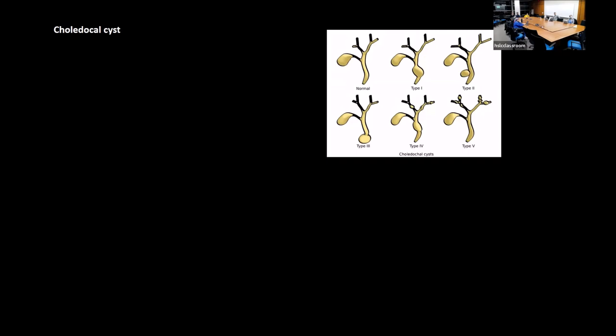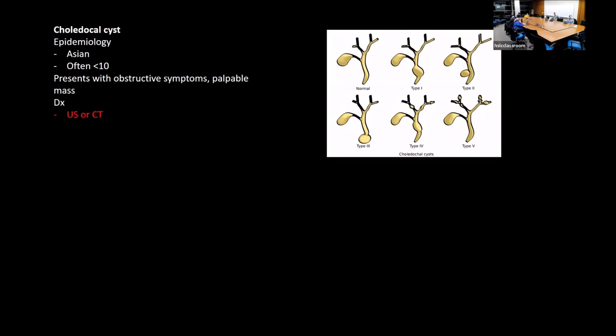Choledochal cysts: associated with pediatric patients, often less than 10 years old. They usually present with obstructive symptoms and possibly a palpable mass. Diagnosed with ultrasound or CT. These cysts should be removed because there is a risk of malignancy.